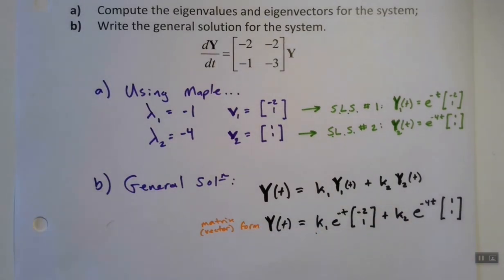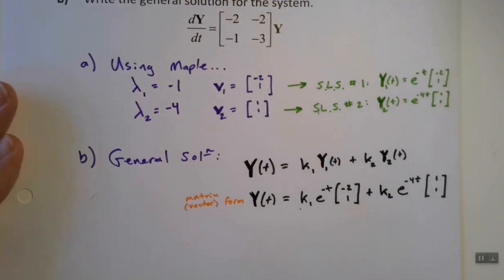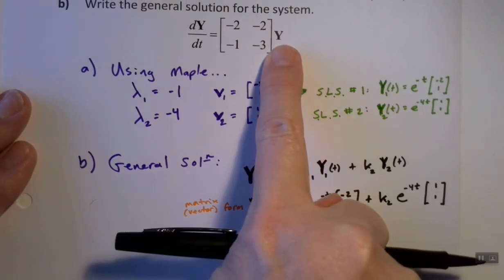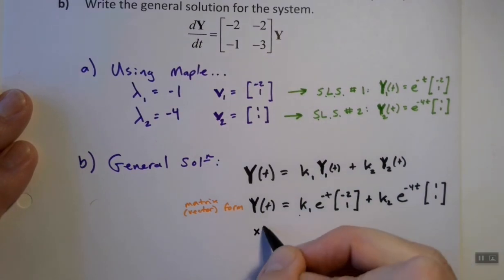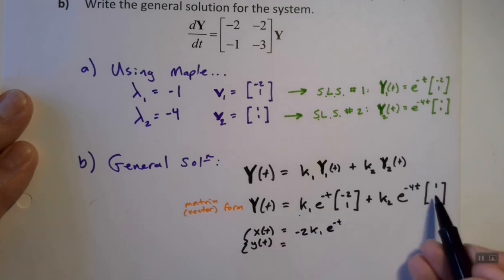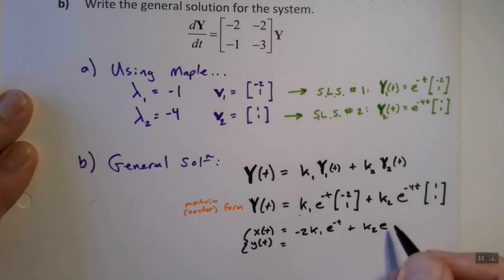And if I wanted to rewrite this in light of the parametric form, I'd have to first decide what I want to call my two variables. You'll notice up here, nowhere does it say I'm dealing with y and v or x and y. So I'm just going to write x of t and y of t are my two variables. And this, as a pair, are going to be my two parametric equations. And so the top equation is going to be negative 2 times k1 times e to the minus t and then 1 times k2, so plus k2 e to the minus 4t. And on the bottom, we have 1 times k1, so this is just going to be k1 e to the minus t plus k2 times 1, so just k2 times e to the minus 4t.